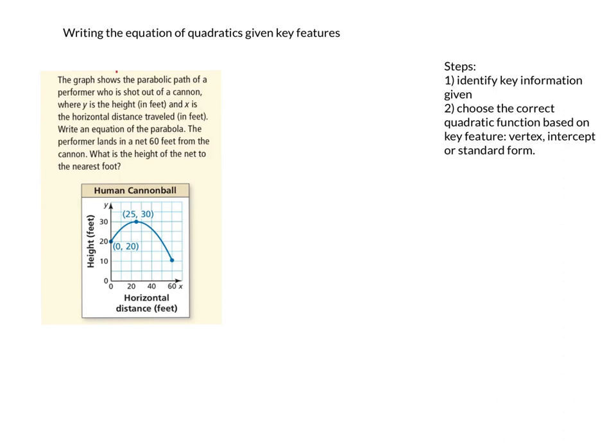The graph shows the parabolic path of a performer who was shot out of a cannon, where y is the height in feet and x is the horizontal distance traveled in feet. Write an equation of the parabola. The performer lands in a net 60 feet from the cannon. What is the height of the net to the nearest foot? You can see in the graph the net's not on the ground — it looks like it's about 10 feet.